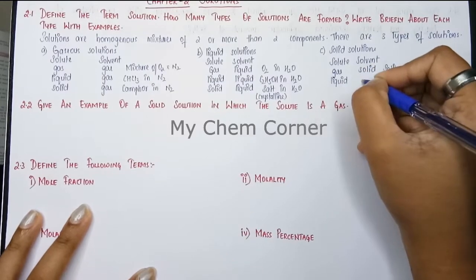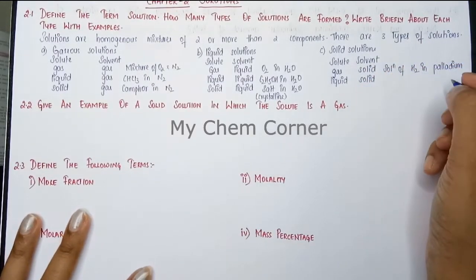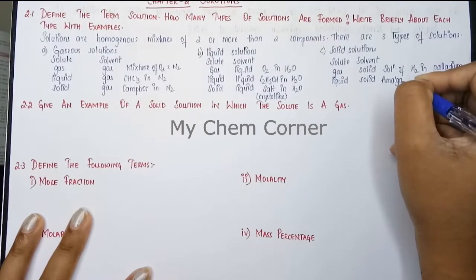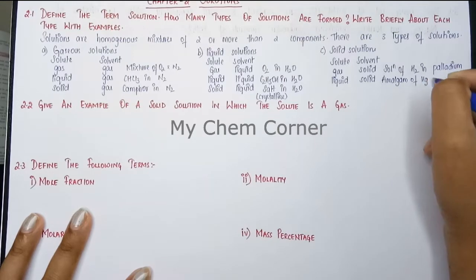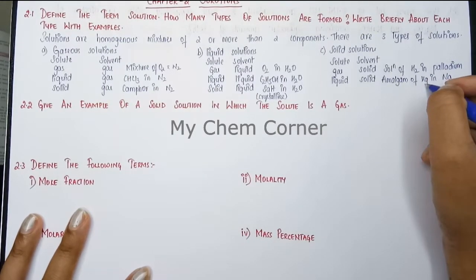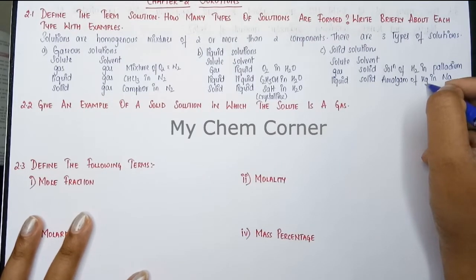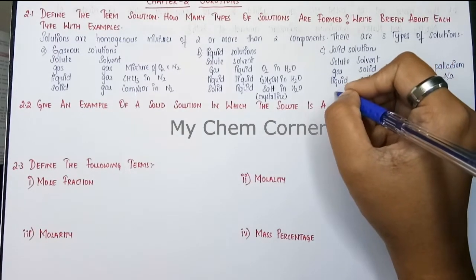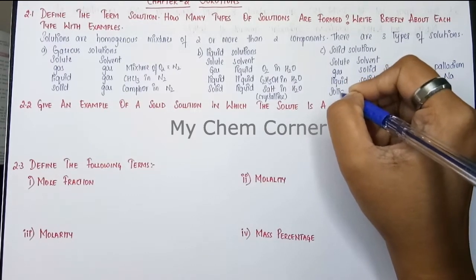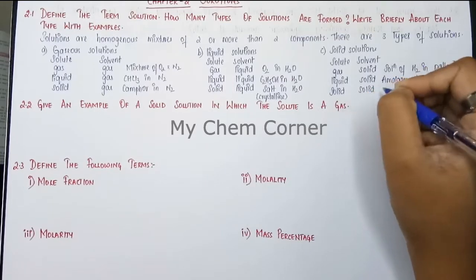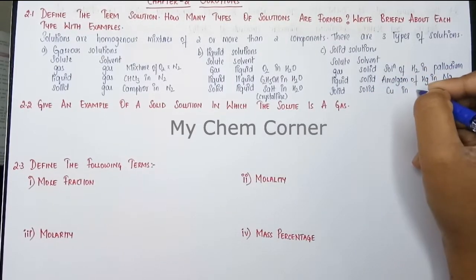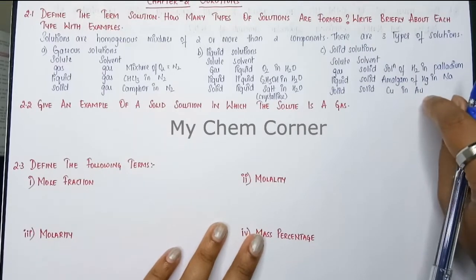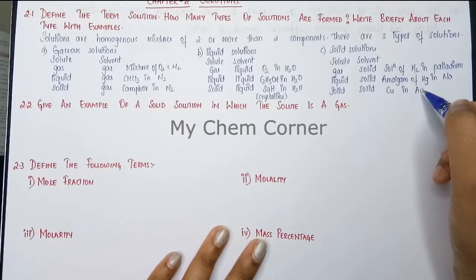When the solute is liquid and the solvent is solid, an example is amalgam of mercury in sodium. Mercury is a liquid metal — although it falls under the metal category, it is not solid — and mixing mercury in sodium gives an amalgam.